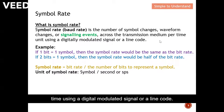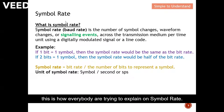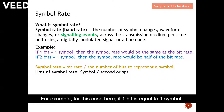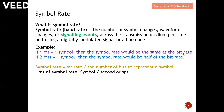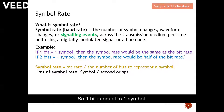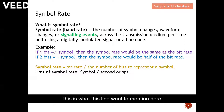Symbol rate is measured across the transmission medium per unit time using a digital modulated signal or a line code. For example, if one bit equals one symbol, then the symbol rate will be exactly the same as the bit rate. If two bits map into one symbol, then the symbol rate will be half of the bit rate — because each symbol now consists of two bits.